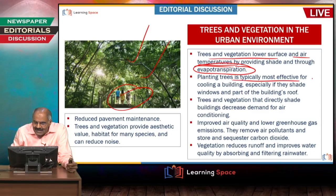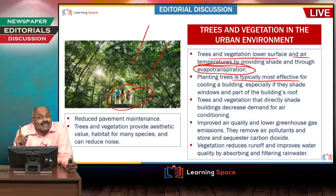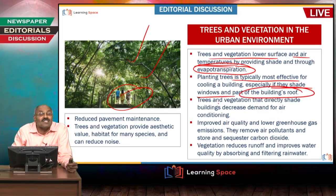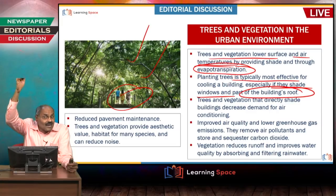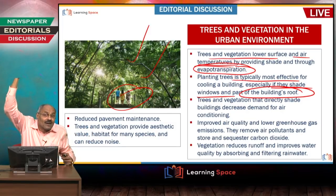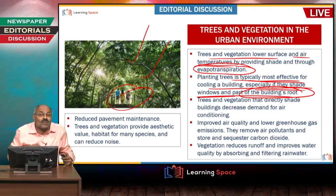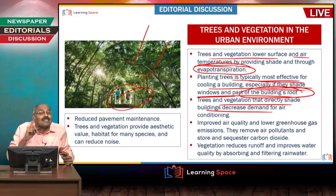Planting trees is typically most effective for cooling a building. If a building is surrounded by trees, it can be cooled naturally. If the windows are shaded and part of the building's roof is covered with trees — as you can see in some villages — the cooling effect is significant. Trees and vegetation that directly shade buildings decrease the demand for air conditioning.